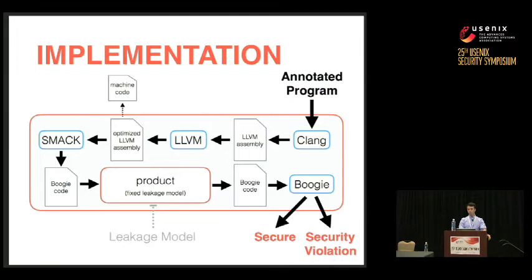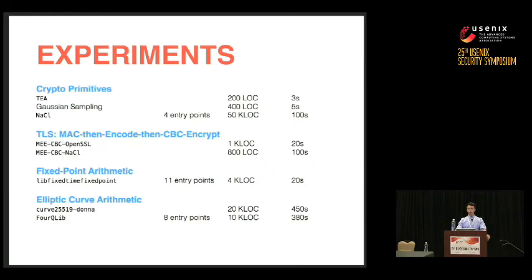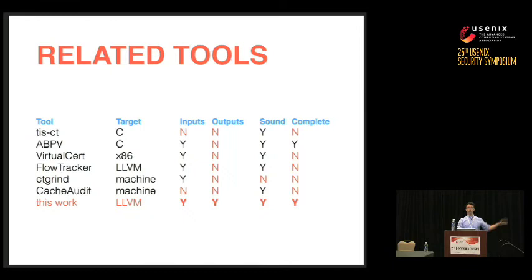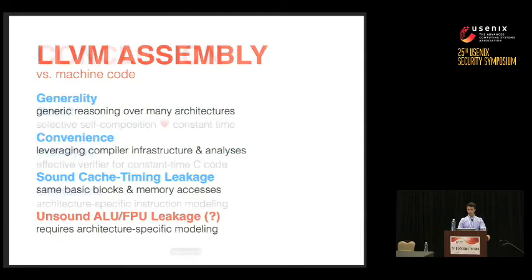Our implementation uses the LLVM toolchain and the Boogie verifier to conclude safety or non-safety of the translated program. We implemented our translation in Boogie's intermediate language. We have experiments validating our approach on real implementations of cryptographic primitives, TLS, fixed-point arithmetic, and elliptic-curve arithmetic. We verified all these examples as correct and identified known flaws in previous versions that were not constant time. Our tool is the first to handle both public/private input differentiation and output declassification, and does both soundly and completely.